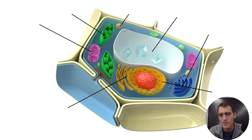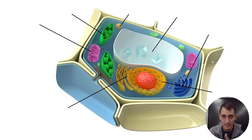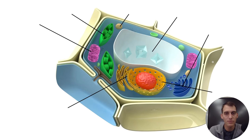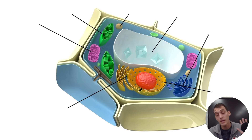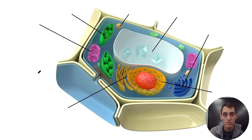Let's review some of the structures by identifying them on the diagrams. Starting in the bottom left corner of the plant cell diagram, we have a system of membranes. There's a part with a bunch of ribosomes and a part without many ribosomes, and it's continuous with the nucleus — that is the endoplasmic reticulum.